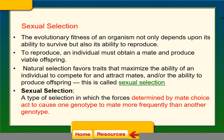Sexual selection can cause one genotype to mate more frequently than another. For example, in warthogs, tusks are part of sexual selection — females will choose males with larger tusks because it increases the chance that their offspring will have large tusks, allowing them to compete better and pass on their genes.